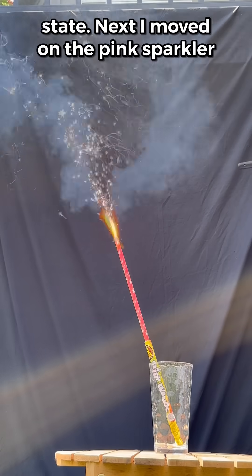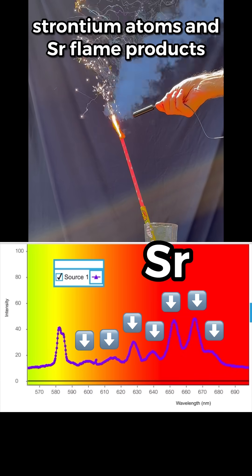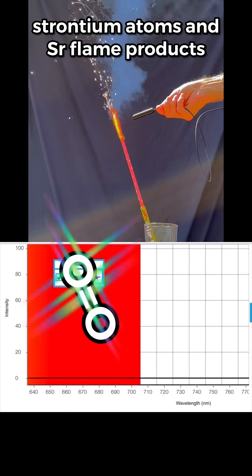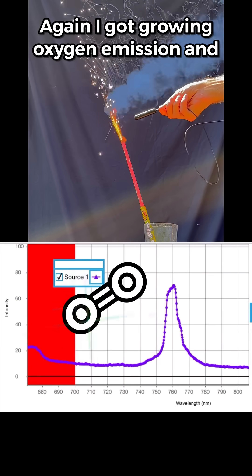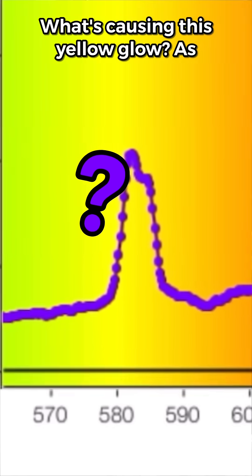Next, I moved on to the pink sparkler. The spectrometer picked up a series of wavelengths characteristic of strontium atoms and strontium flame products. Again, I got glowing oxygen emission and that intense pesky line at 580 nanometers. What's causing this yellow glow?